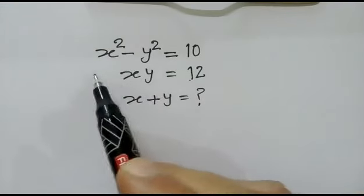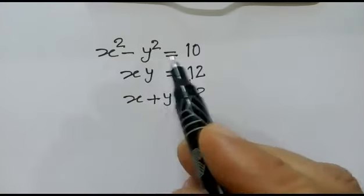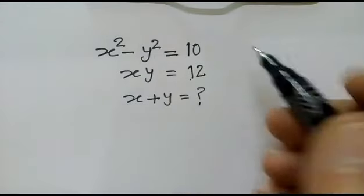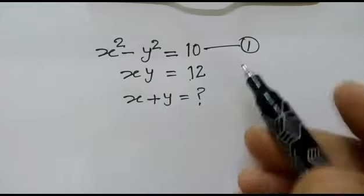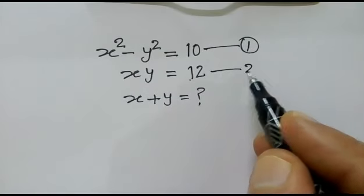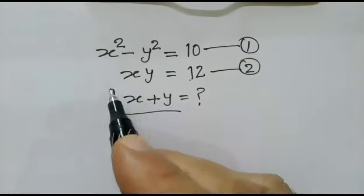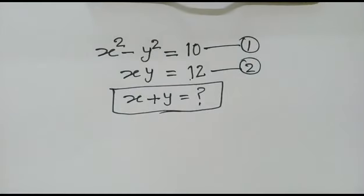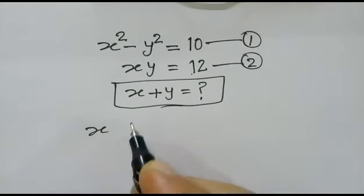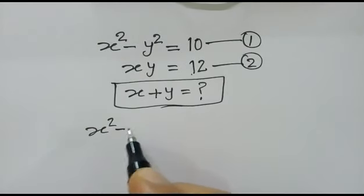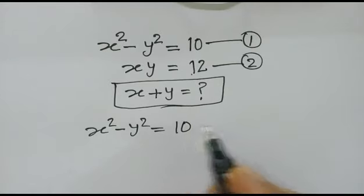We are given two equations: x squared minus y squared equals 10 (equation 1) and xy equals 12 (equation 2). We have to find the value of x plus y.